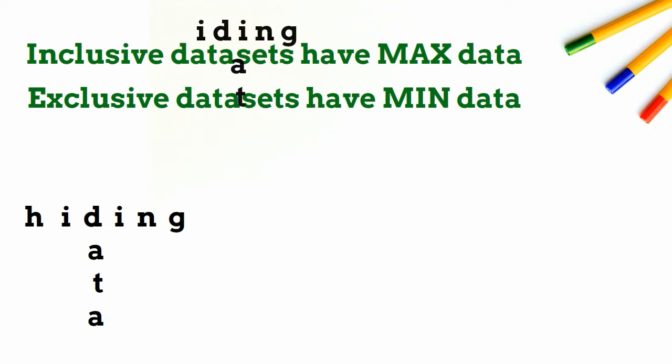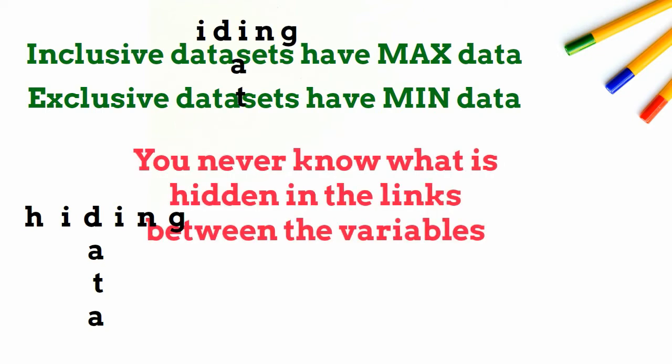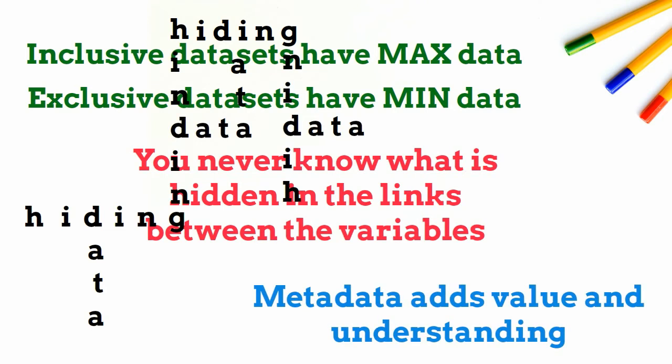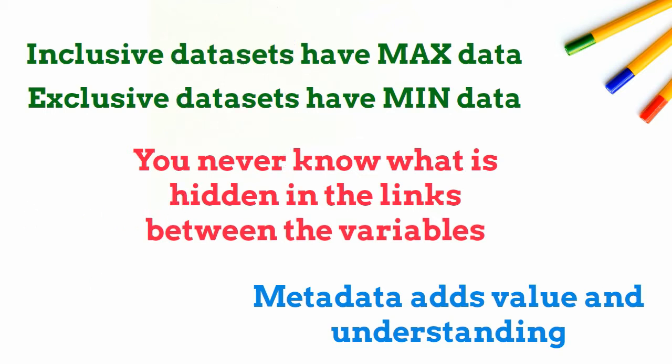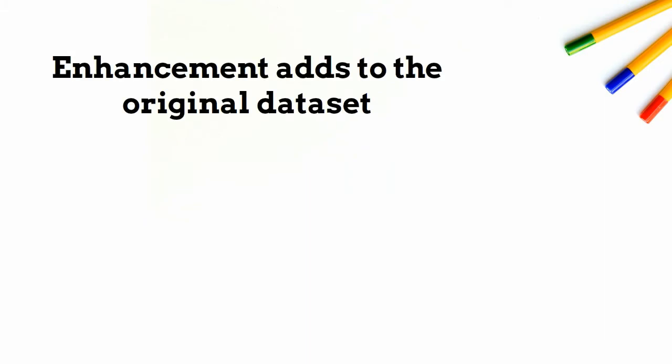Secondly, inclusive datasets have as much data in them as they can, which gives more options for the variables to be used. If you remove some variables, then undiscovered patterns from the metadata and relationships disappear because you have removed the pointers to them.